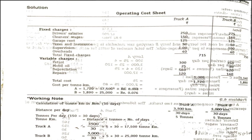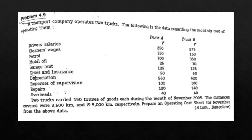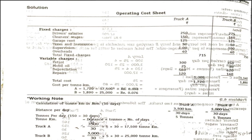Next, we calculate tons per day — how many tons are being carried. The total tons stated in the problem is 150 tons. So 150 divided by 30 days gives 5 tons per day. This 150 tons applies to both truck A and truck B, so both have 5 tons per day.